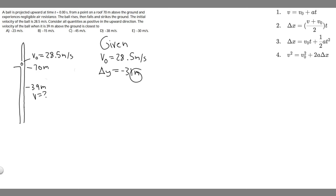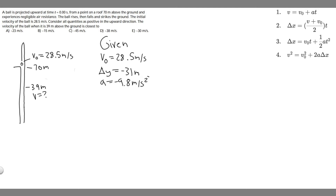We're also not directly told, but we assume in problems like these, that acceleration is negative 9.8 meters per second squared — that's just the acceleration due to gravity, assuming we're on Earth. So now we have our three kinematic variables: v₀, delta y, and a. These are the kinematic variables for this interval from the beginning to 39 meters.